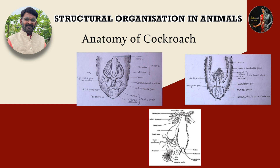Many species of cockroaches are wild and of no economic importance. But a few species thrive in and around human habitats. They damage and destroy household items — eatables, clothes, and shoes. They also carry harmful germs and diseases like diarrhea, cholera, typhoid, and tuberculosis. They contaminate food items with their smelly excreta. Animals like frogs, toads, lizards, birds, and snakes eat cockroaches.